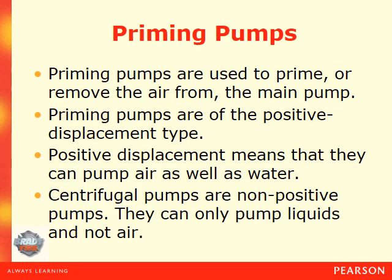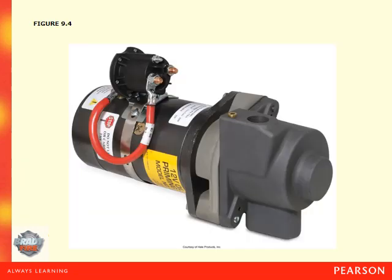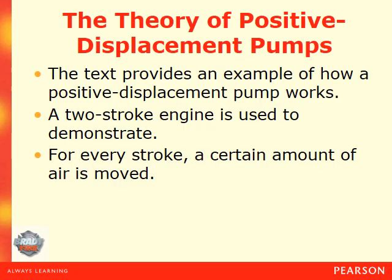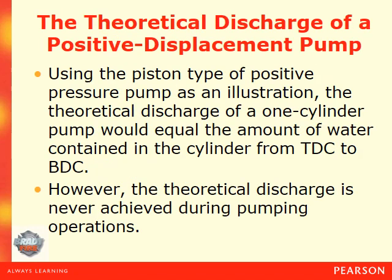Priming pumps are used to prime or remove the air from the main pump. Priming pumps are of the positive displacement type, meaning they can pump air as well as water. Centrifugal pumps are non-positive pumps — they can only pump liquids and not air. The text provides an example using a two-stroke engine to demonstrate how a positive displacement pump works: for every stroke, a certain amount of air is moved. The theoretical discharge of a one-cylinder pump equals the amount of water contained in the cylinder from TDC to BDC. However, the theoretical discharge is never achieved during pumping operations.